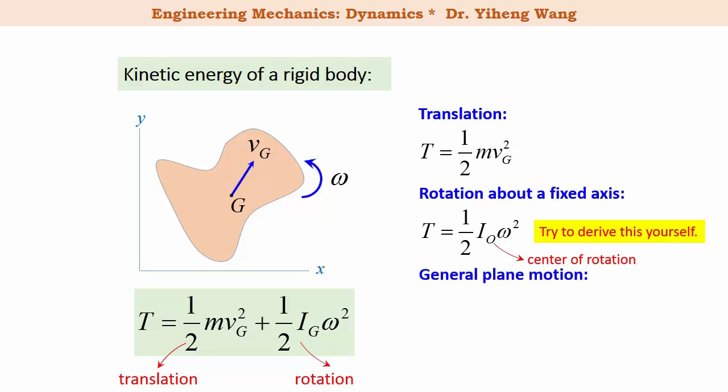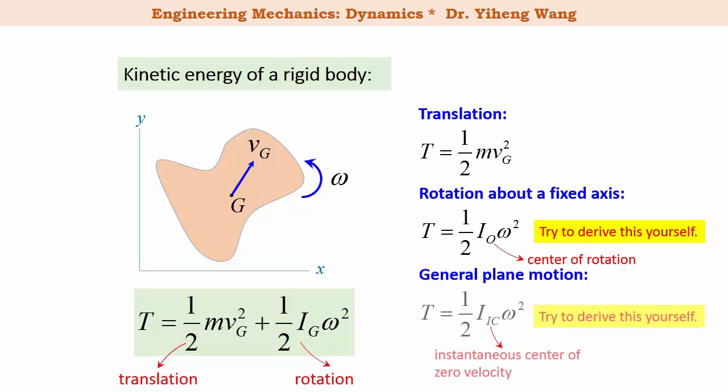For general plane motion, the general equation still applies, but if we can locate the instantaneous center of zero velocity, then the kinetic energy can also be determined as one-half I_IC omega squared, where I_IC is the mass moment of inertia about the instantaneous center of zero velocity.